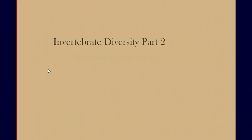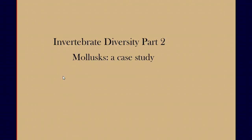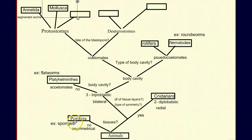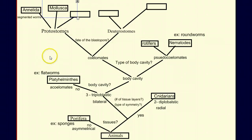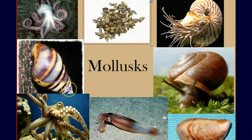This is the second video in our series on invertebrate diversity. In this video, we're going to look at mollusks as a case study. When we left our story, we had worked our way up through the invertebrates all the way to the protostome branch of the coelomates, where we ended with annelids. In this video, we'll spend our entire time talking about the phylum Mollusca. There's a pretty broad diversity within mollusks, and we're going to use this group to explain some concepts that we see in the diversity of invertebrates.